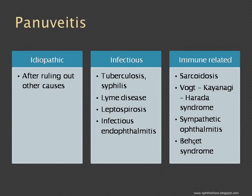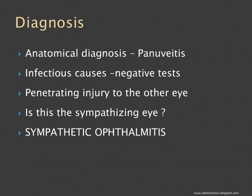Which one of these could be causing this disease? We have a very important clue — a penetrating injury to the other eye. Is this the sympathizing eye? Since it is bilateral pan-uveitis, sympathetic ophthalmitis is a bilateral pan-uveitis of the granulomatous variety.